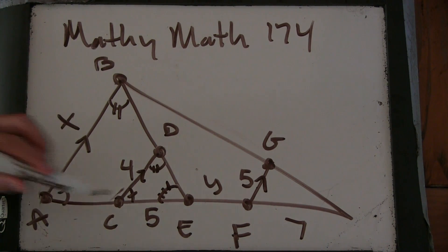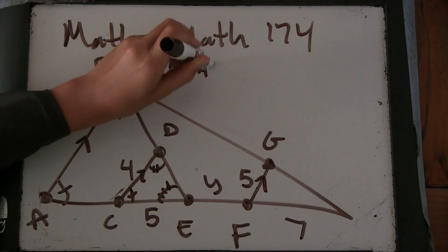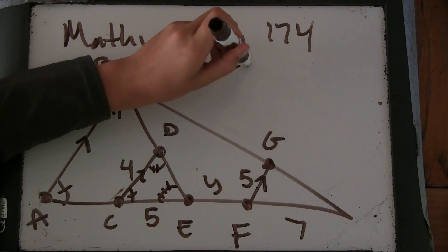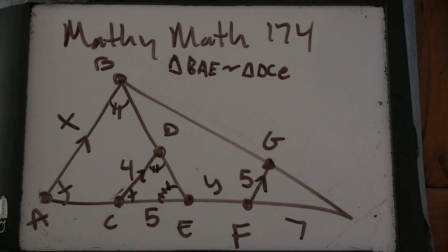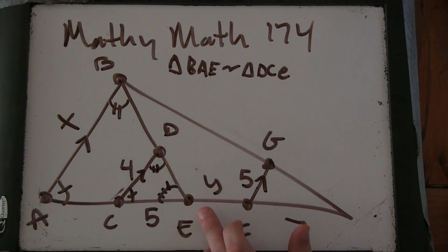So now triangle BAE is similar to triangle DCE. Now let's make sure we've said that right. B, A, E, D, C, E. Okay, good.